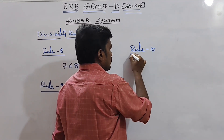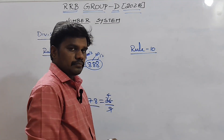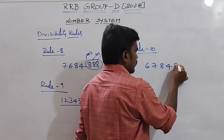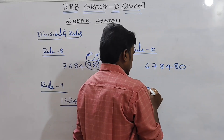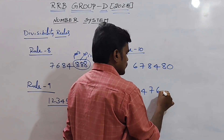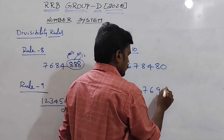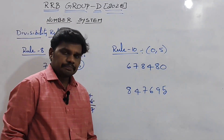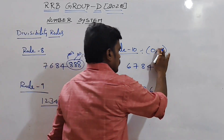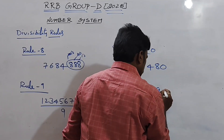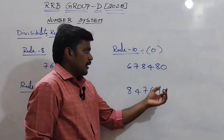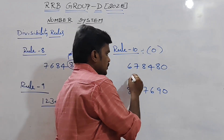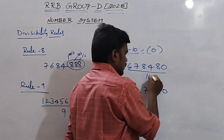Rule number 10: Take numbers like 6,784,80 and 847,695. For divisibility by 10, only the last digit must be 0. If the last digit is 0, then it is possible to divide by 10.